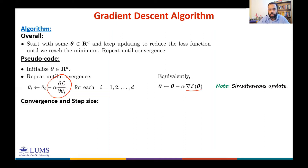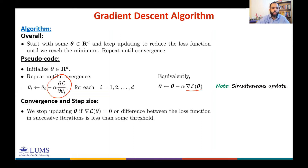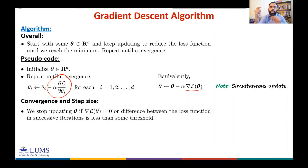Regarding convergence and step size: we stop updating θ if either the gradient is zero, or the difference between the loss function in successive iterations is less than some threshold. If the decrease in the loss function over successive iterations is below the threshold, that is the stopping criterion.